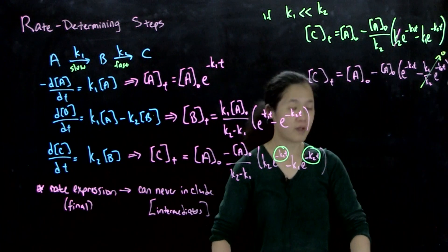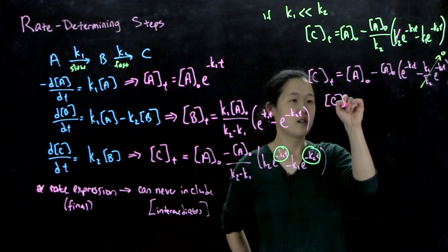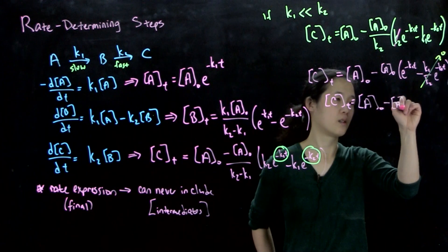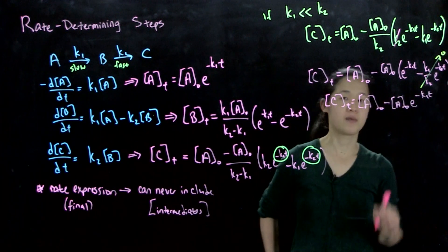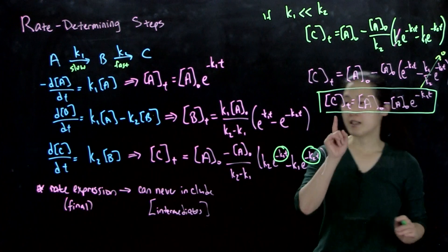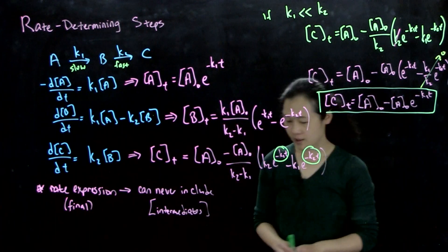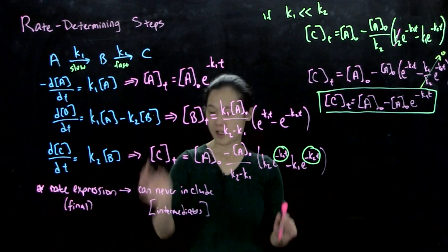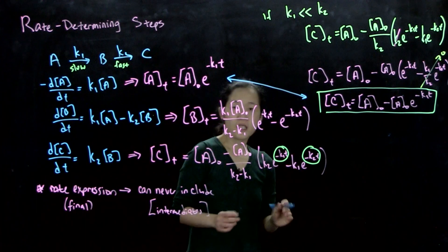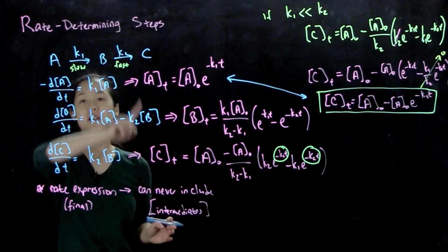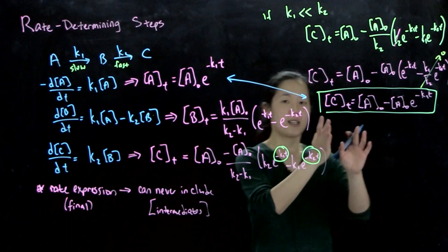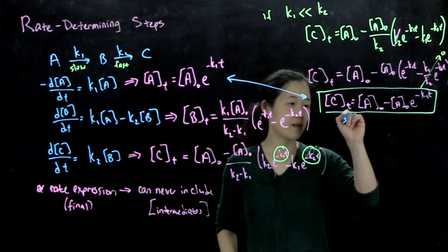And then, therefore, our final rate expression, or integrated rate law, rather, for C equals A0(1 - e^(-k1t)). So here's our integrated rate law of C. And what you'll notice is this expression is very, very similar to our expression from just the first order k of A. So these two are very similar. So this would be equivalent of having just like a one-step reaction where you went from A to C with a rate constant of k1.